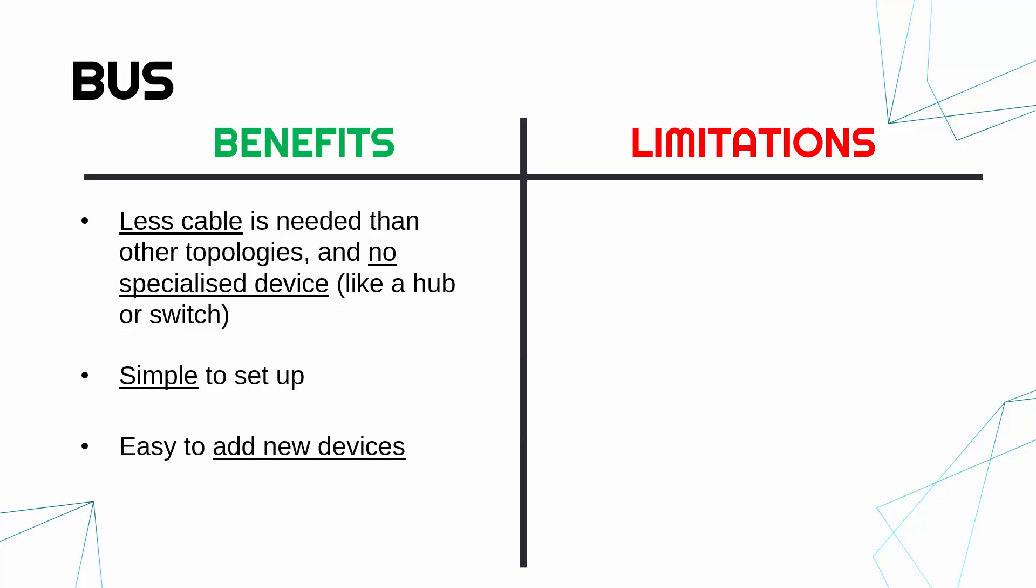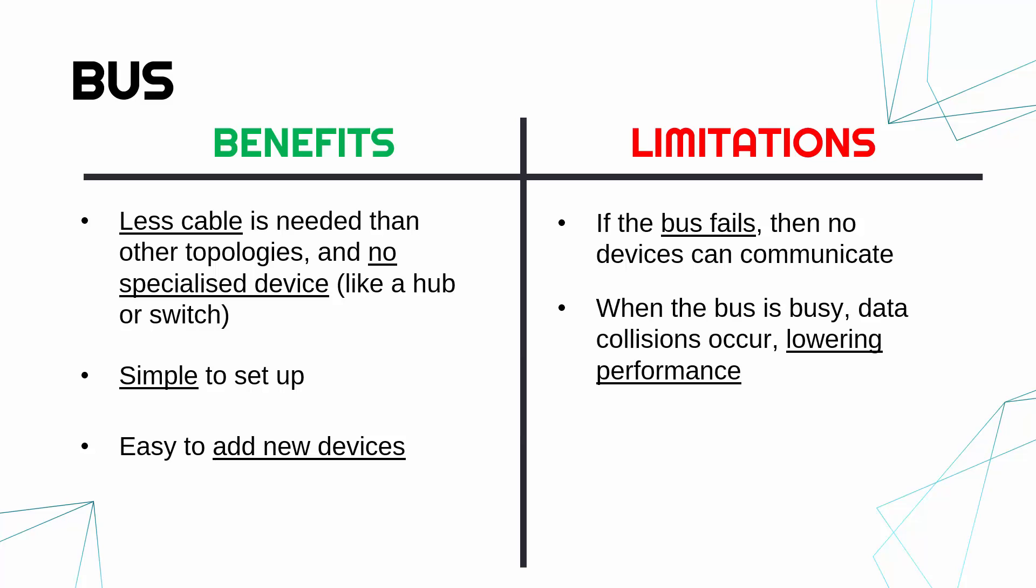Likewise, it should be easy to add new devices. All you do is plug in a cable to that main wire. Bus topologies are always wired. There is no wireless option really. But, like a star topology, we are really reliant on that central aspect. Here, the bus is what our central aspect is. If the bus goes down, then the whole network also goes down. The bus is essential.